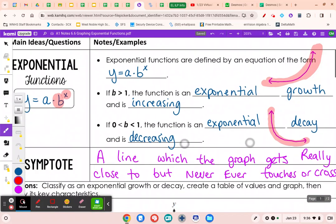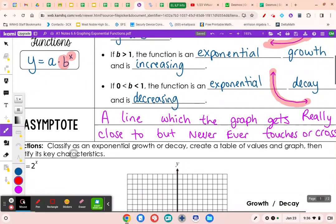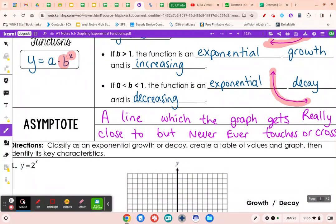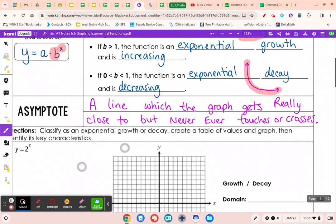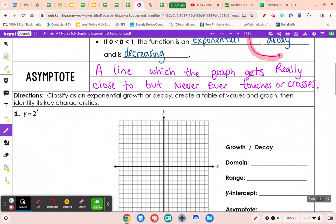We have a new vocab word. It's called an asymptote. It's a line which the graph gets really close to but never ever touches or crosses. We are going to start looking at some of these exponential growth or decay problems and graph them.